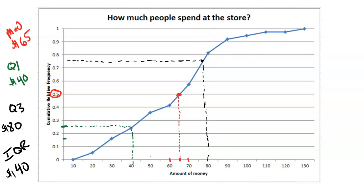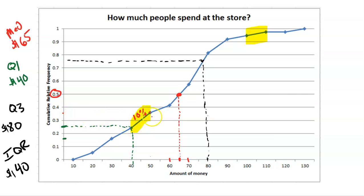Other things to notice: the line from $40 to $50 is pretty steep compared to the line from $100 to $110, which is not as steep. What does that mean? More steep — bigger slope — means more data. We know $40 is about the 25th percentile, and $50 would be maybe the 35th percentile. So that means 10% of data is in between there — 10% of all people at the grocery store spent somewhere between $40 and $50.